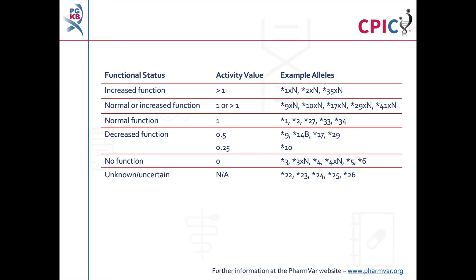There are almost 150 different CYP2D6 alleles which are designated as star alleles. Each star allele can be assigned an activity value based on its activity level compared to the star 1 allele, which has an activity value of 1. This table gives the activity values of some CYP2D6 star alleles. It is based on the CYP2D6 allele functionality table, which can be found on the PharmGKB and CPIC websites. It is strongly recommended that you consult the full allele functionality table as it gives further examples of alleles with their activity values as well as extensive notes and caveats that should be considered.